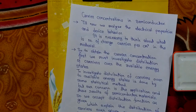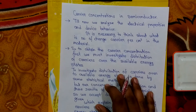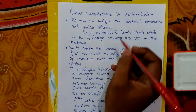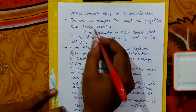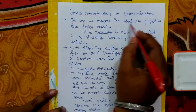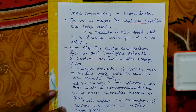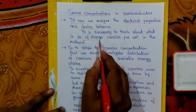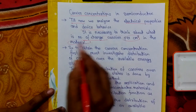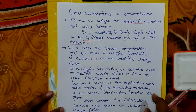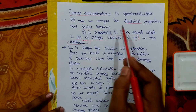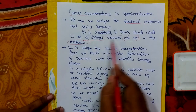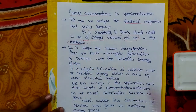In the previous video we covered the electrical properties of semiconductors. In this video we are going to see carrier concentration of the semiconductor. We analyzed the electrical properties of devices and their behavior, how they behave when temperature increases or decreases. Now we are going to see what is the charge carrier per centimeter cube in the semiconductor or given material.